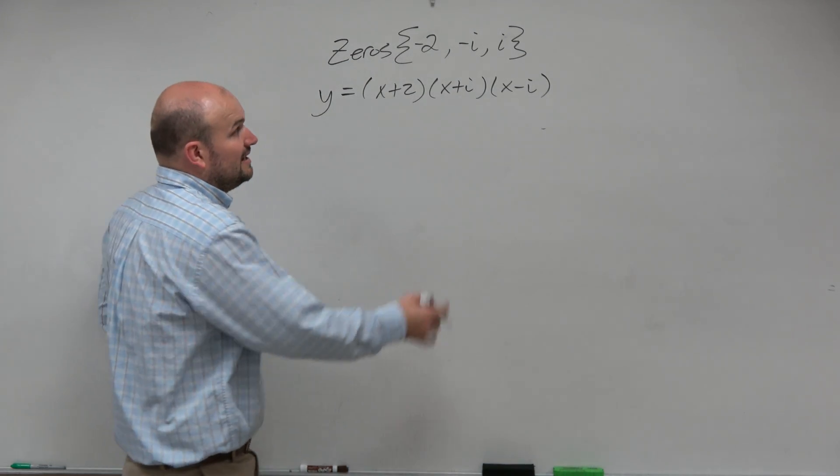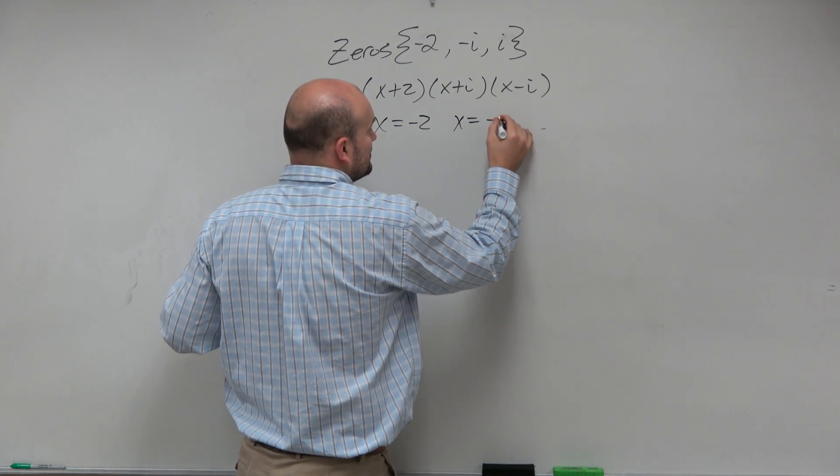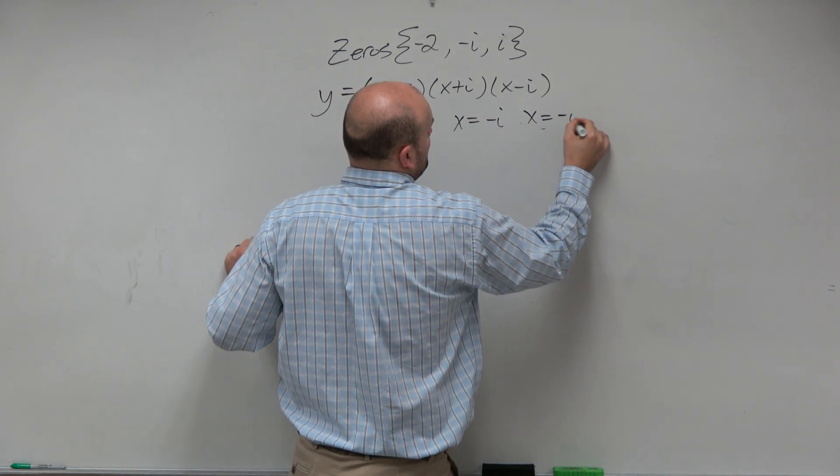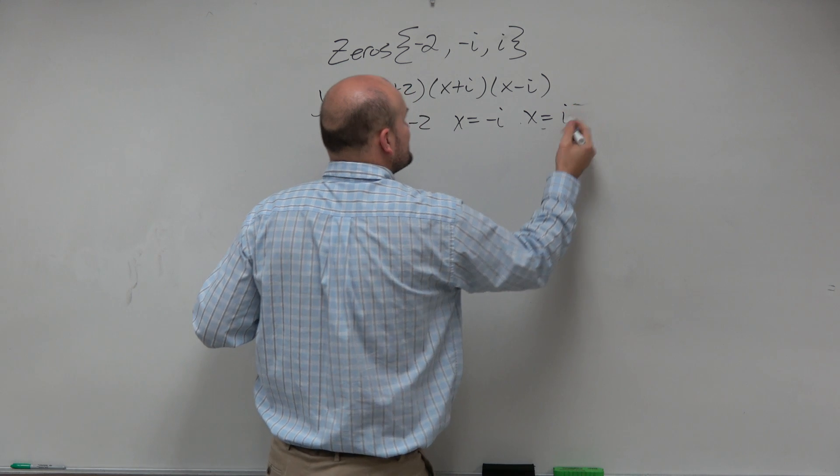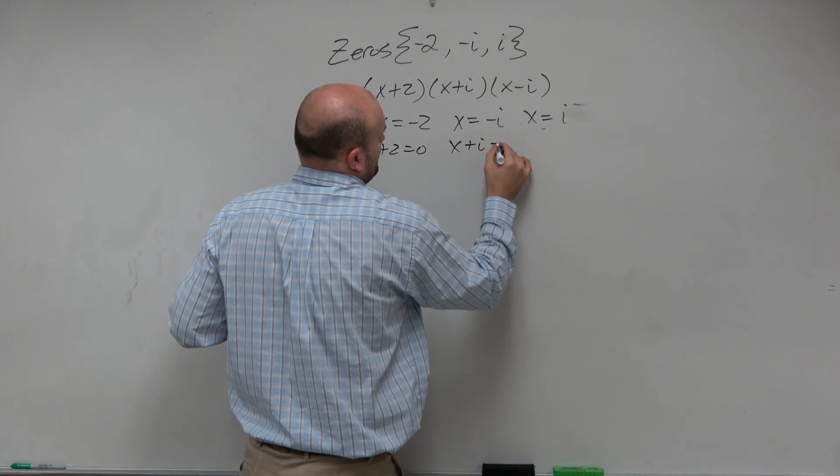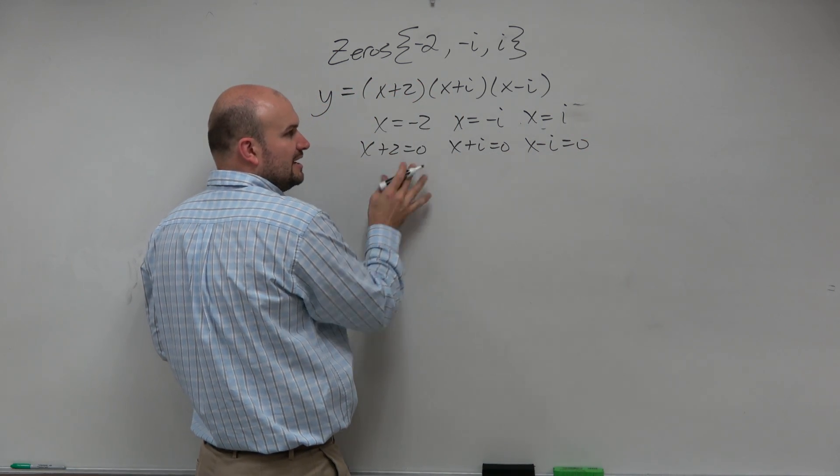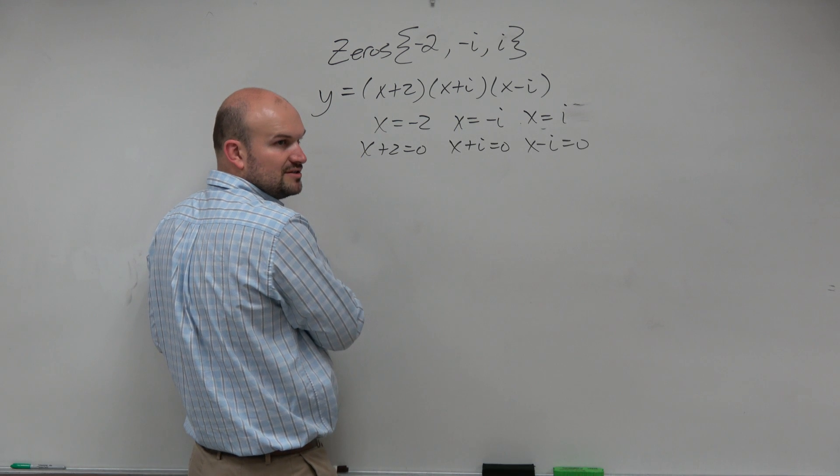And all I simply did is I took each of these equal to x, and then set them equal to 0. And then each one of these is a product times 0, and that's how I got my factors.